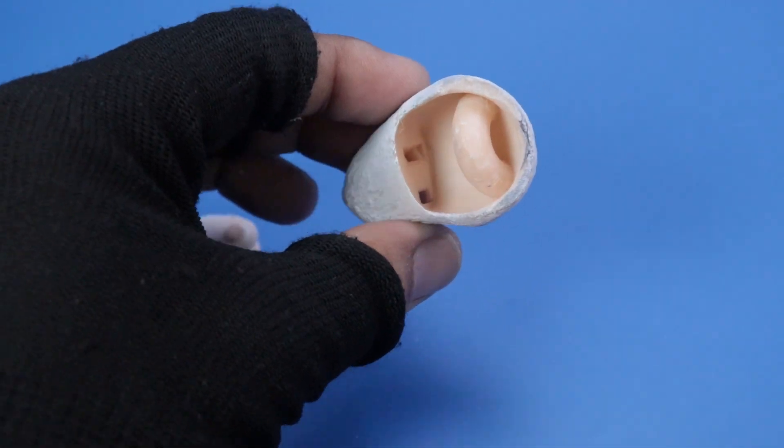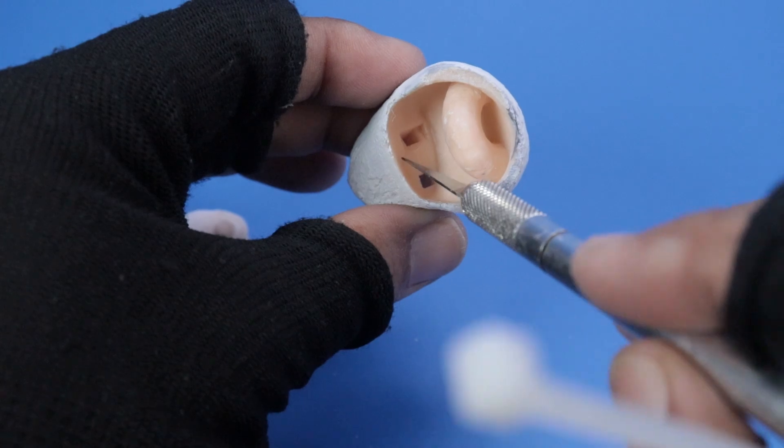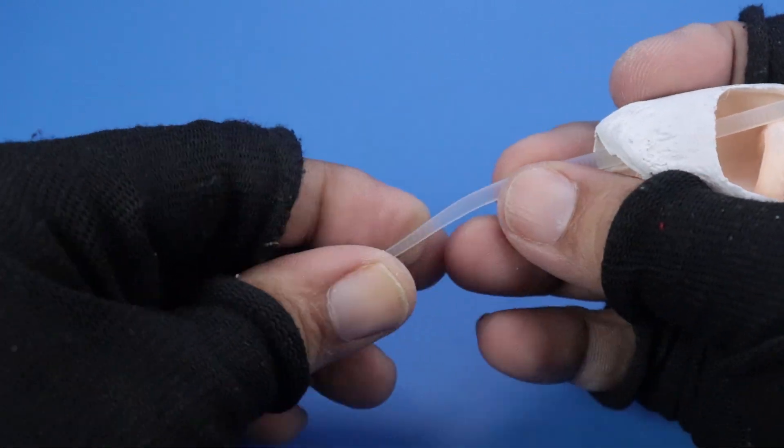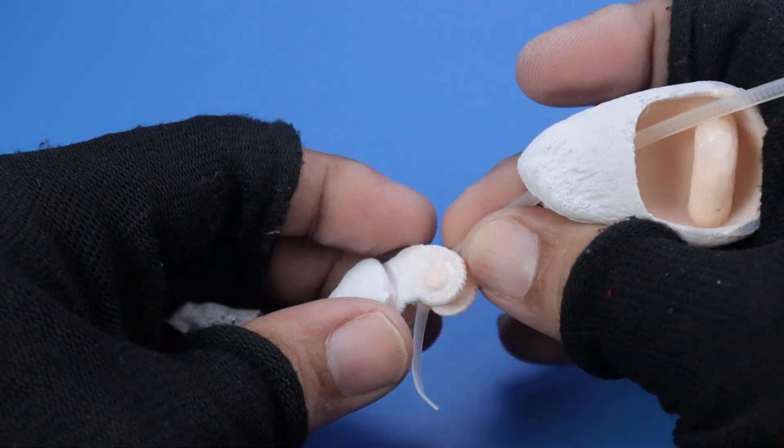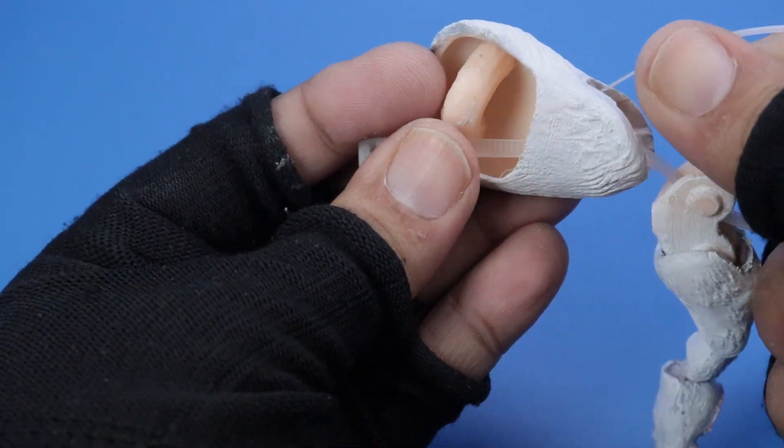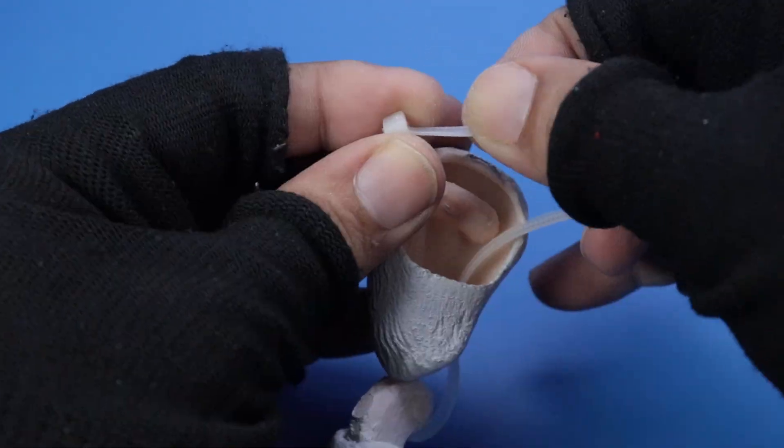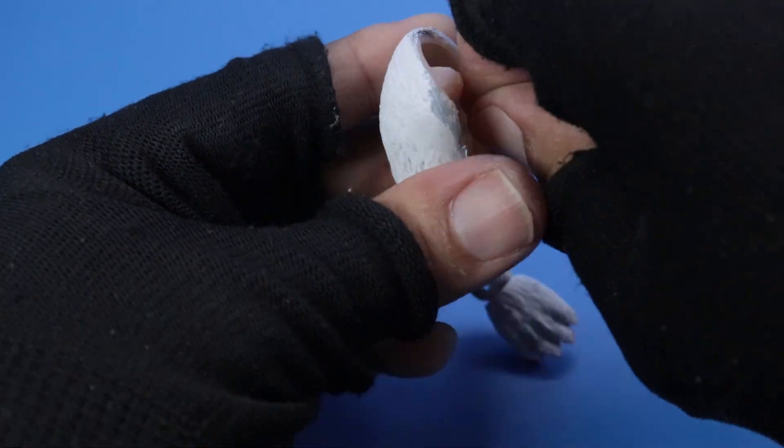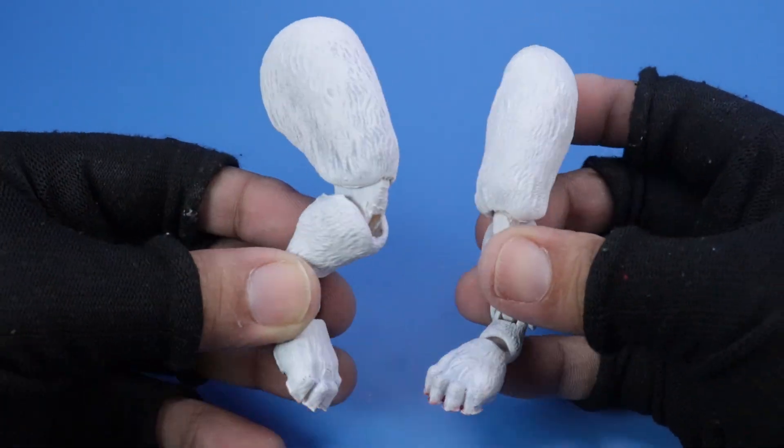Now, insert a zip tie into the inner cavity of the thigh. The tail should pass through one of the slots and loop around the upper elbow bridge. Feed the zip tie back into the thigh, then lock, tighten, and trim the excess. Repeat the same process for both hind legs.